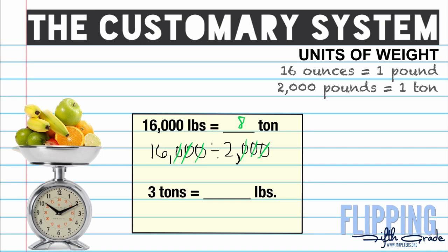When doing the reversal we are going to be multiplying. So we have 3 tons times 2,000 pounds because in each ton there are 2,000 pounds. You multiply the non-zero digits first to get 6 and then add your zeros. So you get 6,000 pounds. 3 tons equals 6,000 pounds.